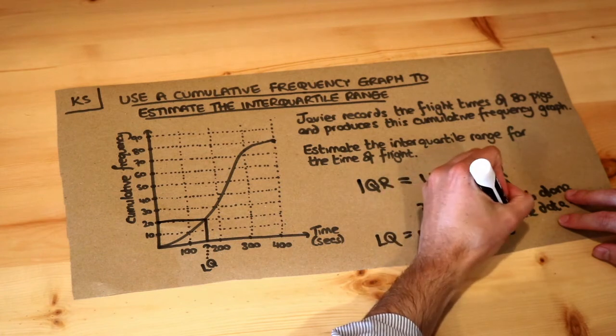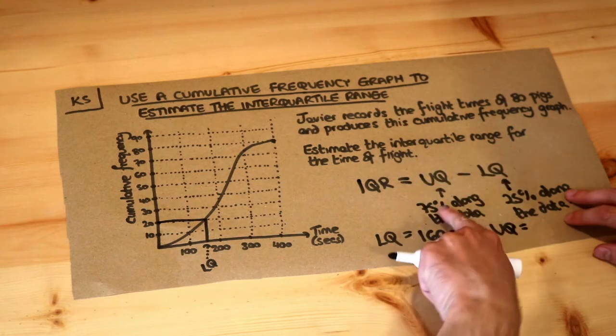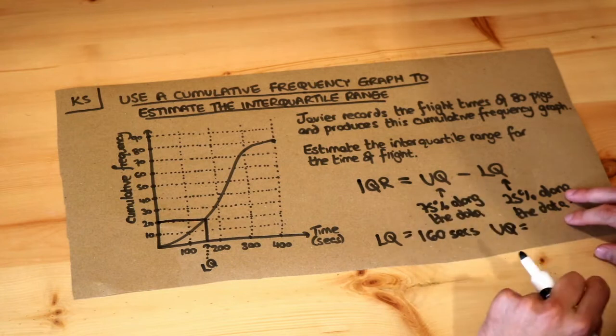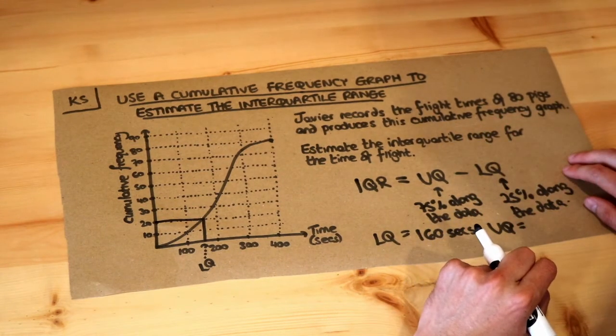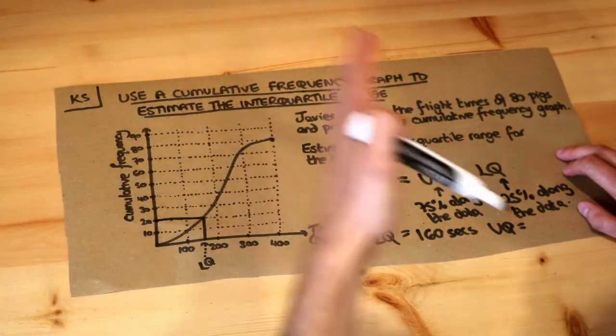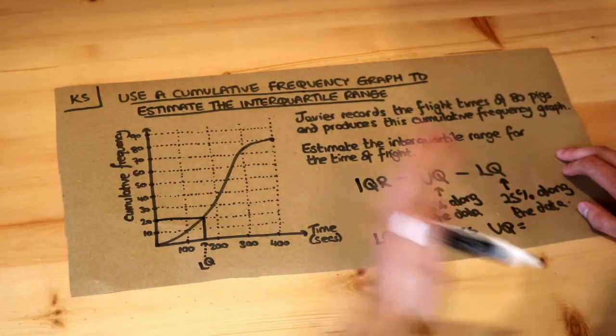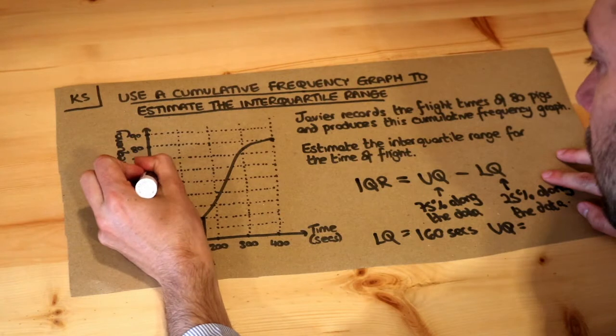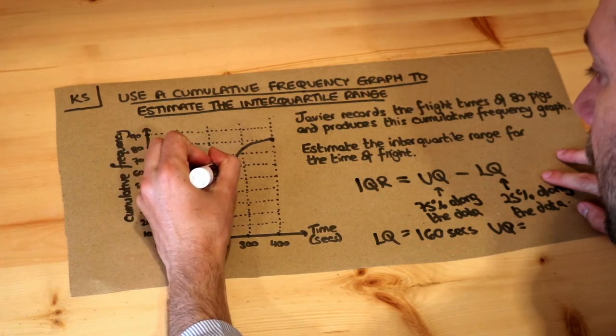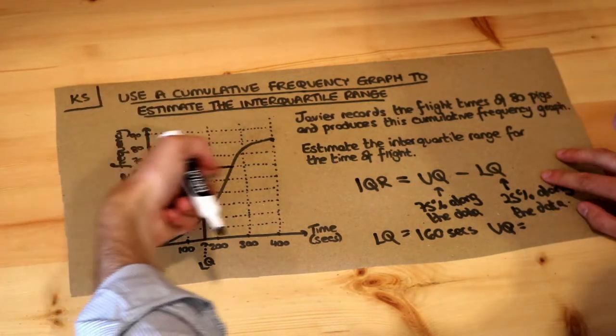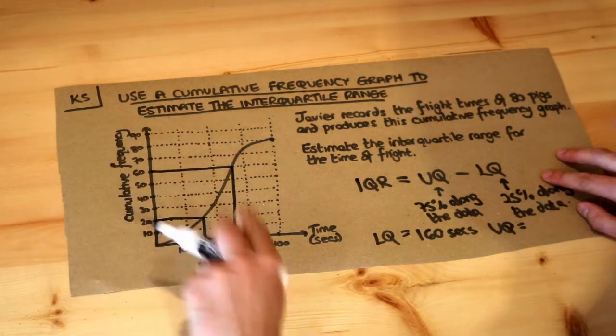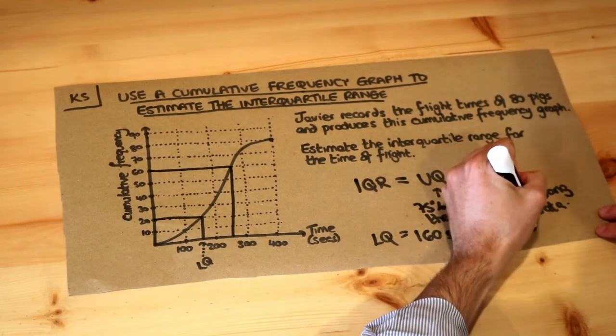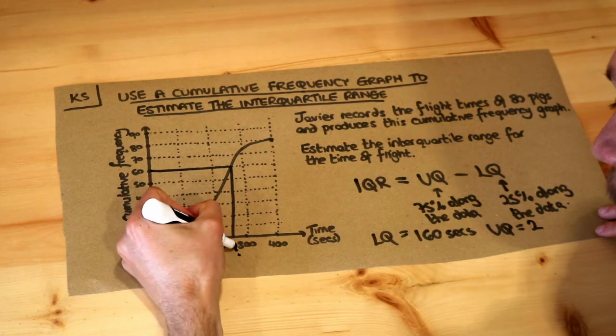And what's the upper quartile? Well we want to go 75% along the data, so that's three quarters of the way along. What's three quarters of 80 pigs? That's 60, so we want to find the flight time of the 60th pig. We look up the 60th pig, come down, and make sure you show these lines as evidence of your working. I would say that's maybe like 260 seconds, so that's the upper quartile.